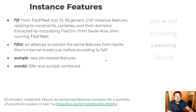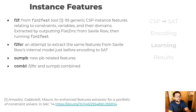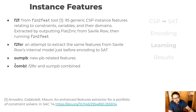For our features, we began with 95 generic instance features from a prior paper. We obtained those by outputting FlatZinc from Savile Row and then running the FuzzIntoFeat tool to give us our feature vector. We then extracted the same features from Savile Row's internal representation just before encoding to SAT. We also introduced some new features specifically related to pseudo-Boolean constraints. Finally, we combined these last two sets to give us a large combined feature set.